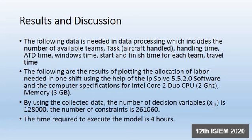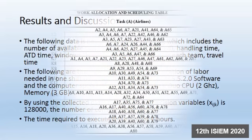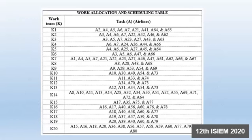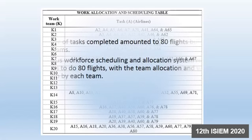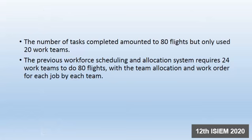The time required to execute the model is approximately 4 hours. The number of tasks completed amounts to 85 flights, but only 20 work teams are used. The previous work scheduling and allocation system required 24 teams to handle 85 flights, demonstrating an improvement in team utilization.